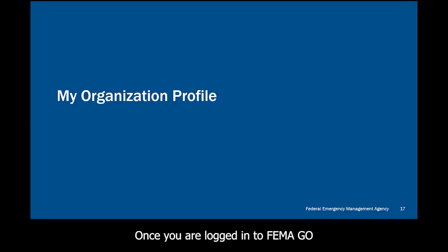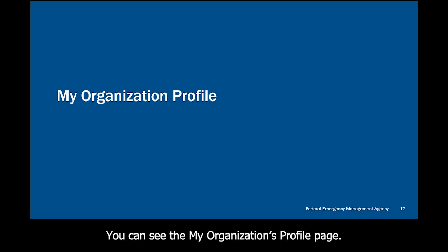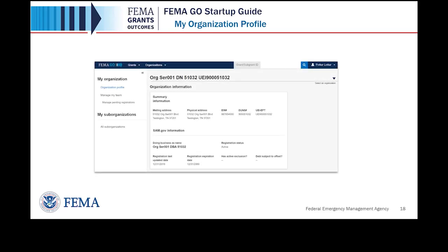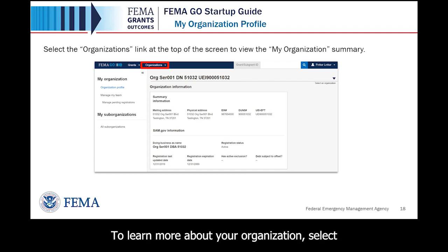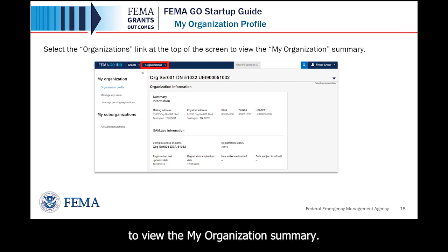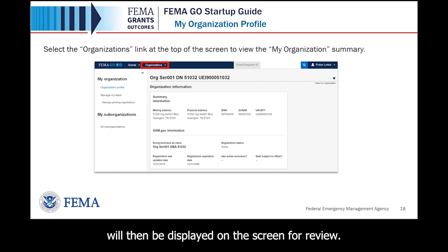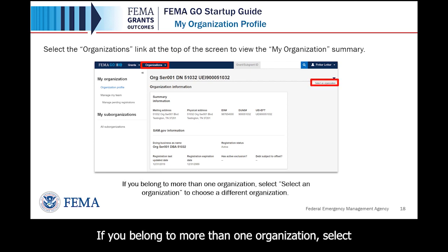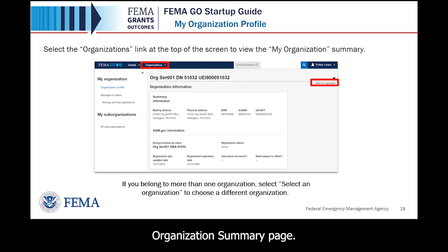Once you are logged into FEMA GO and set up with an organization, you can see the My Organizations profile page. To navigate there, select the Organizations link at the top of the screen in the blue banner to view the My Organization Summary. Your organization summary information will then be displayed on the screen for review. If you belong to more than one organization, select the dropdown 'Select an Organization' on the right side of the screen to choose a different organization summary page.